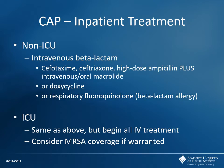Moving into inpatient therapy, at this point you're going to start using more IV therapy. The benefits of IV therapy are 100% bioavailability, quicker onset, they get right into the bloodstream immediately — good systemic coverage. Typically you're going to start off with an intravenous beta-lactam, something like a third-generation cephalosporin — like cefotaxime or ceftriaxone — or a high-dose ampicillin. You want to use that in addition to a macrolide like azithromycin.